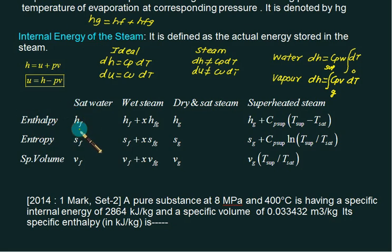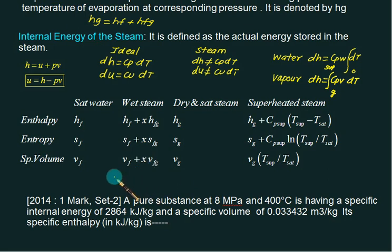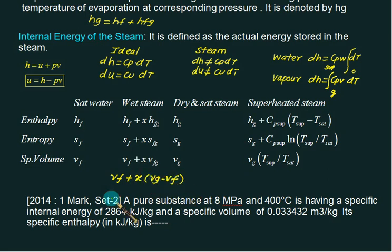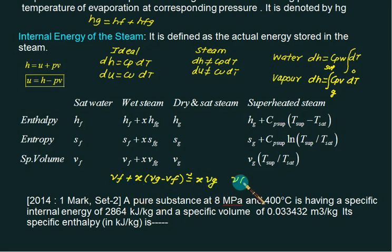From the steam tables: enthalpy for saturated water is hf; for wet steam it is hf + x·hfg; for dry saturated steam it is hg. Specific volume for wet steam is vf + x·(vg − vf). Note that vf is very very small compared to vg, so for quick calculation you can approximate specific volume of wet steam as x·vg, but use the full formula when vf and vg are given.